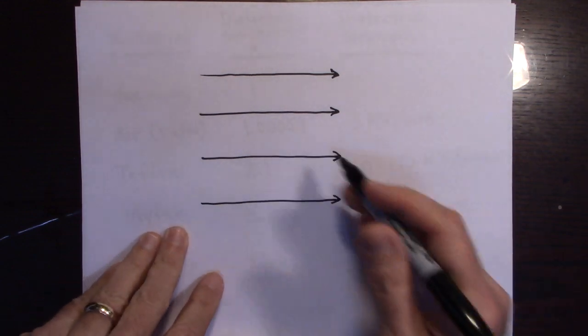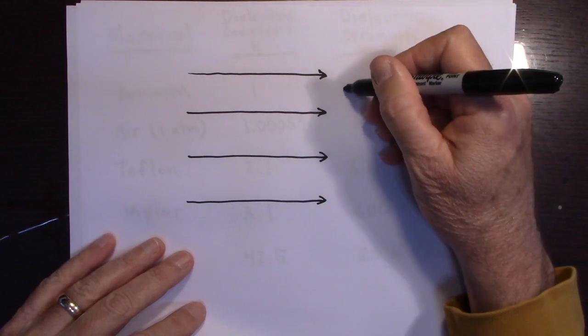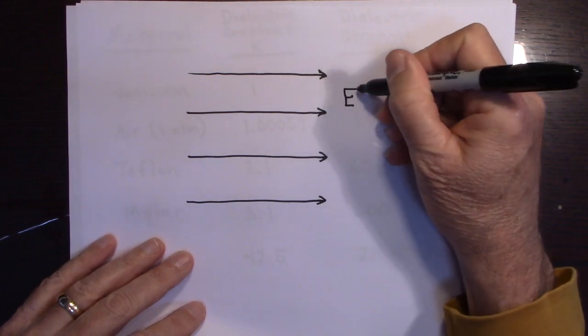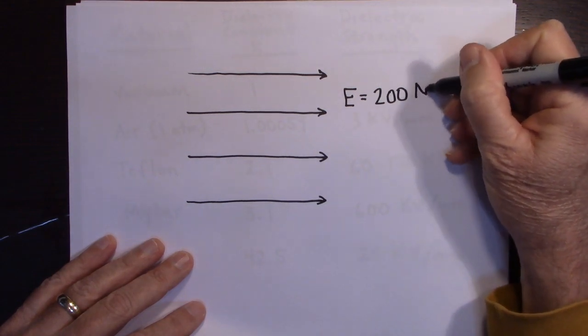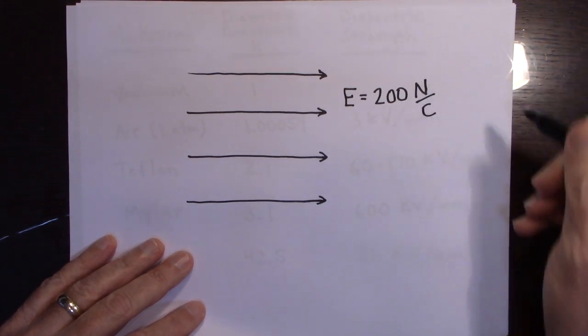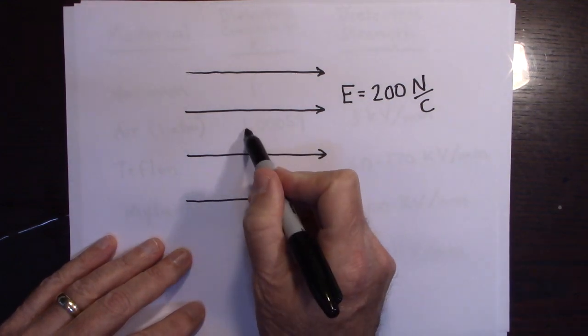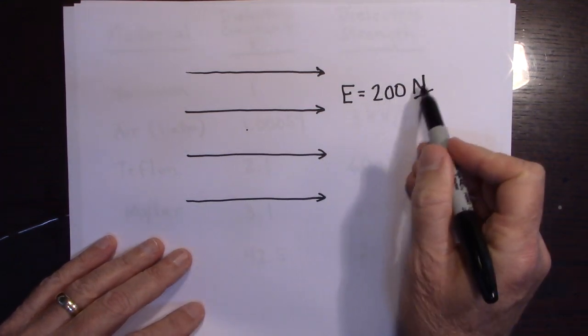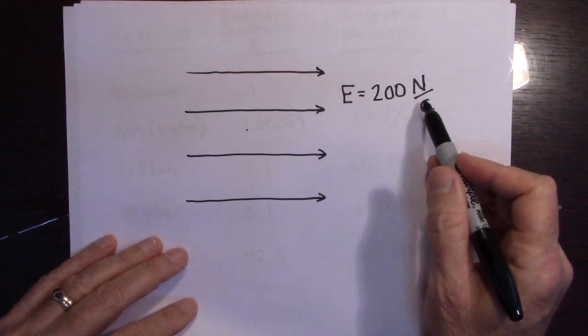And so there's two ways to talk about the field here. You could say that the electric field, I'm just going to make up a number now. Let's say the field is 200 newtons per coulomb. The way you interpret that is every coulomb of charge you put, say, right here, it'll have 200 newtons of force on it for every coulomb of charge.